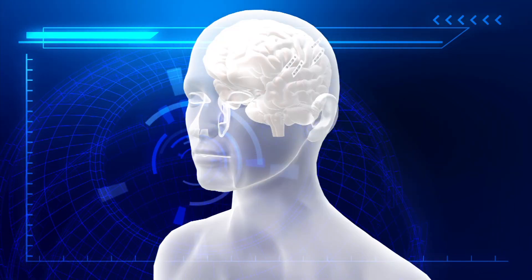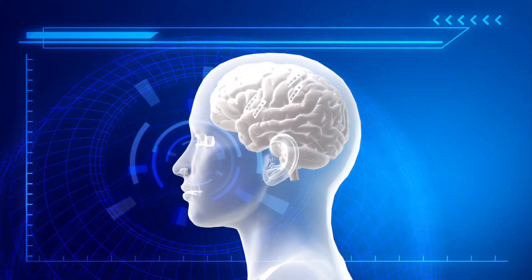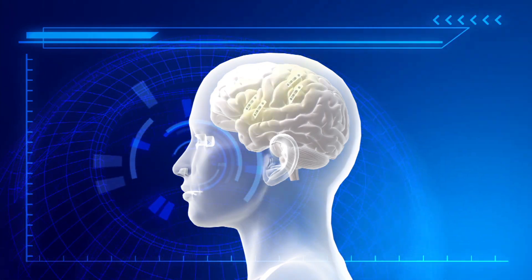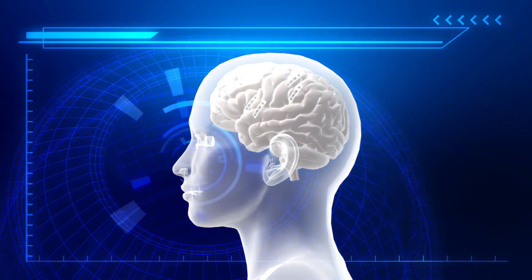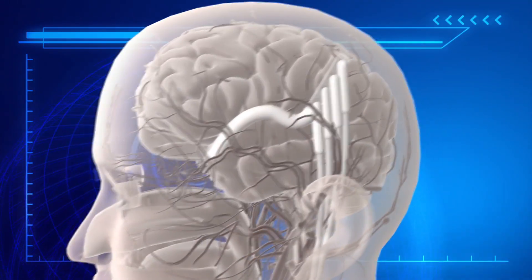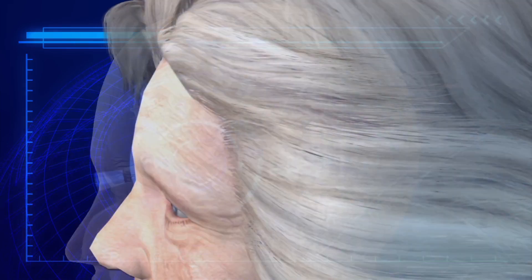Two of the electrode strips are placed over the region of the left motor cortex that controls hand movements, while the other two are placed over the left prefrontal cortex as a backup. The electrode strips are connected to a transmitter device that is installed inside the left side of the patient's chest.